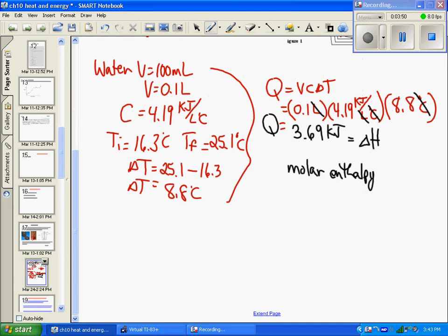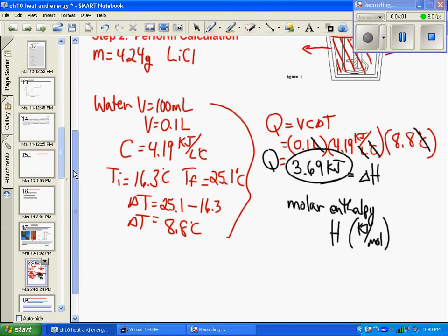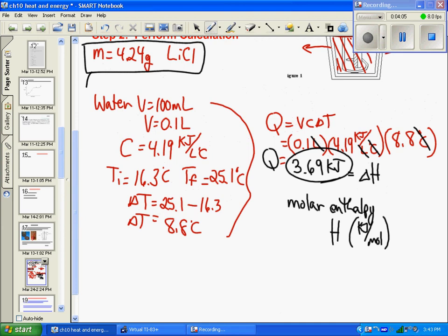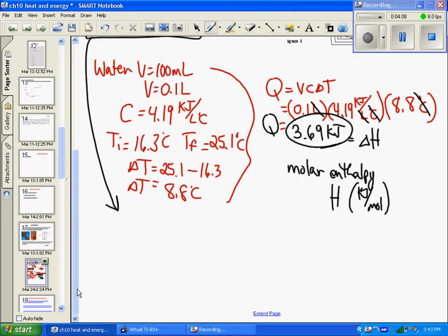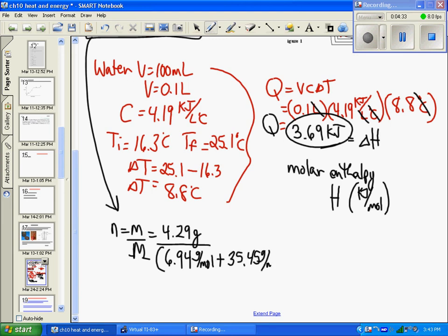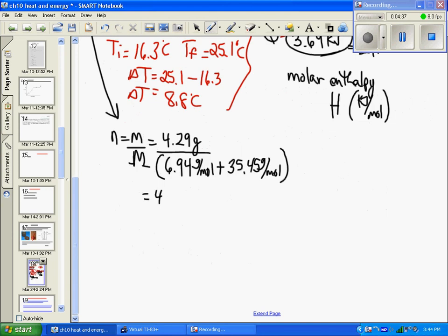You need to take what we have in kilojoules and divide by the number of moles. We get that from our initial information: 4.24 grams of lithium chloride. We need to know how many moles that is. It's mass over molar mass. We have 4.24 grams, and the molar mass is lithium (6.94 grams per mole) plus chloride (35.45 grams per mole).